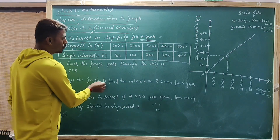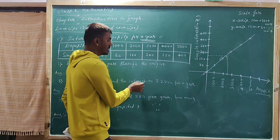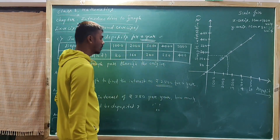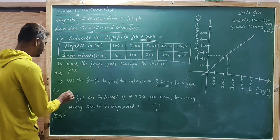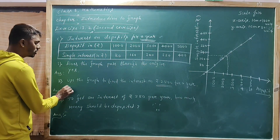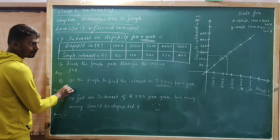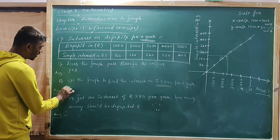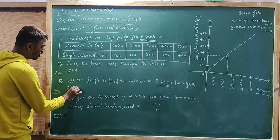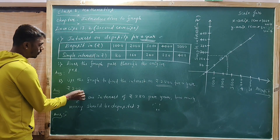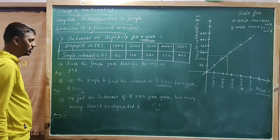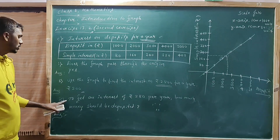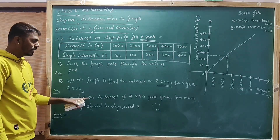Use the graph to find the interest on 2500 rupees. That value is 200 rupees. State the answer with units: rupees 200.